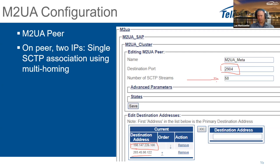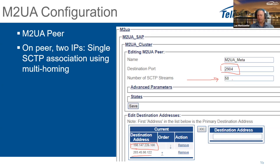You can also configure the number of SCTP streams in an SCTP association. There will be a negotiation between our system and the media gateway controller to determine the number of streams, which provides different quality of service on each stream. Even if you configure a different value than the MetaSwitch MGC, it will negotiate to the correct value — for example, if we put 50 and they put 10, the final number of streams will be 10. This is auto-configured when the initial SCTP association is created.